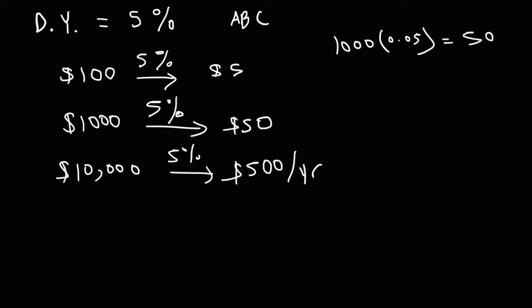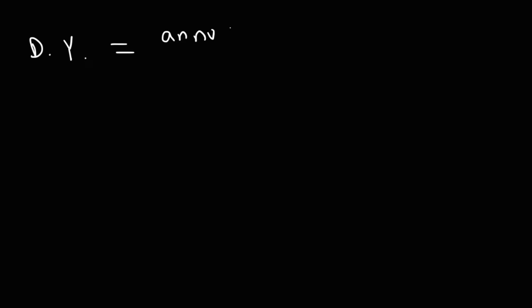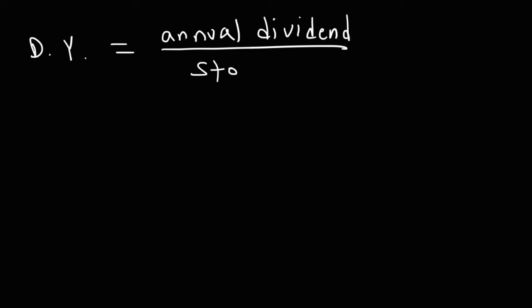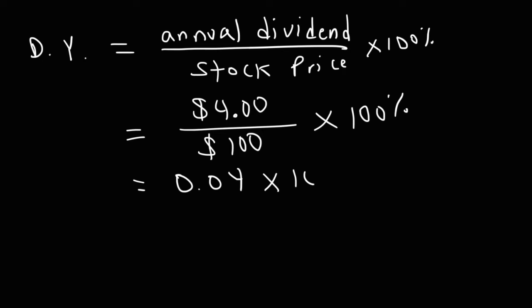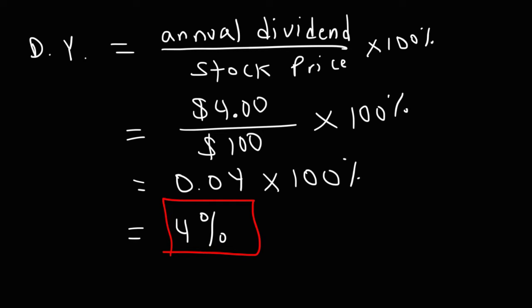So that's what the dividend yield tells you. Now, how do we calculate the annual dividend yield? The dividend yield can be calculated using this formula: it's the annual dividend divided by the current stock price, times 100%. For example, if a company pays an annual dividend of $4 and the current stock price is $100, you take 4 divided by 100, which gives you 0.04, then multiply by 100% to get 4%.